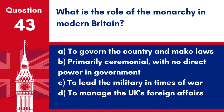Question 43: What is the role of the monarchy in modern Britain? a. To govern the country and make laws. b. Primarily ceremonial, with no direct power in government. c. To lead the military in times of war. d. To manage the UK's foreign affairs. Answer: b. Primarily ceremonial, with no direct power in government. The British monarchy today has a largely symbolic role, with the Queen performing ceremonial duties and acting as a figurehead.